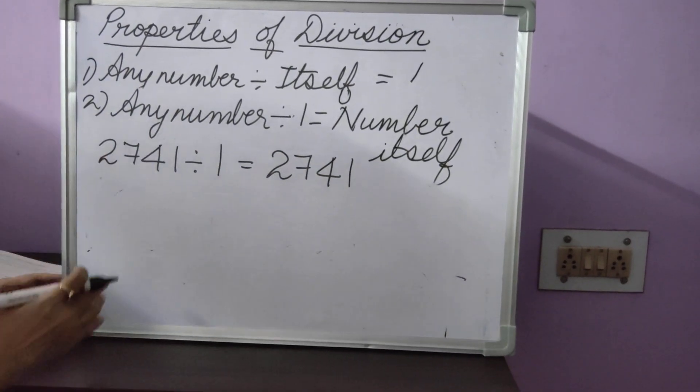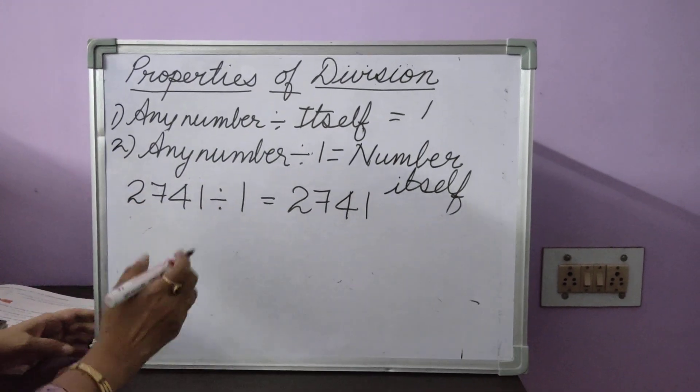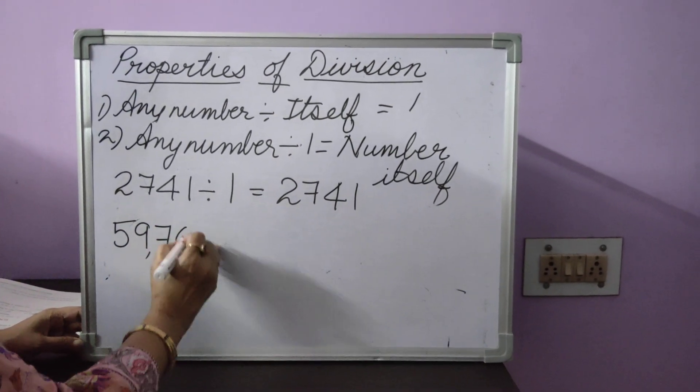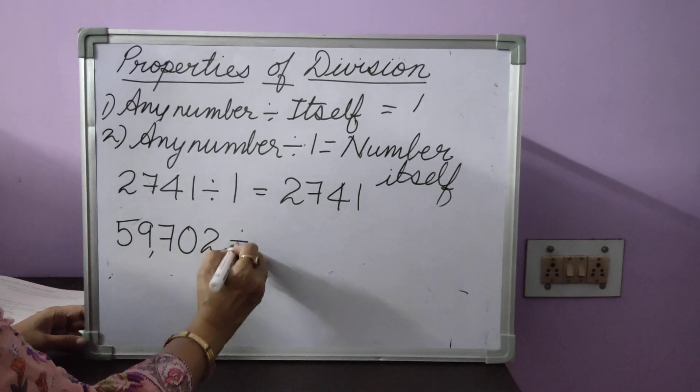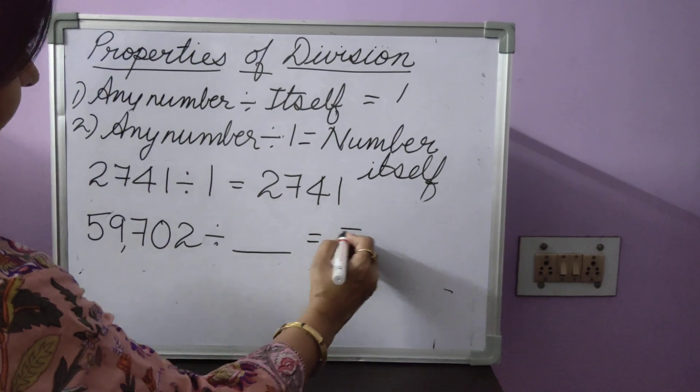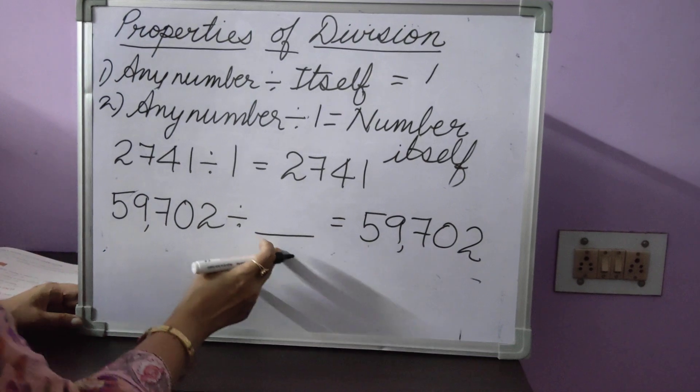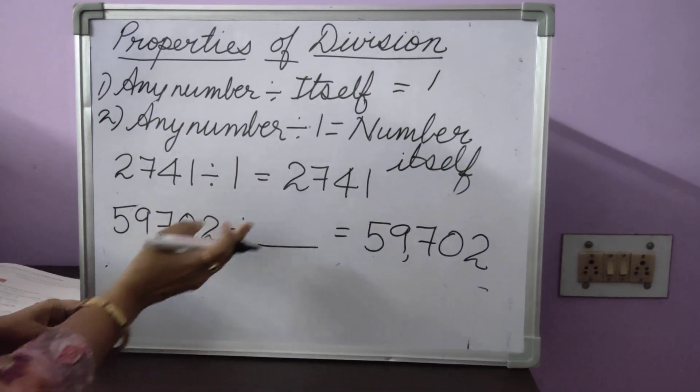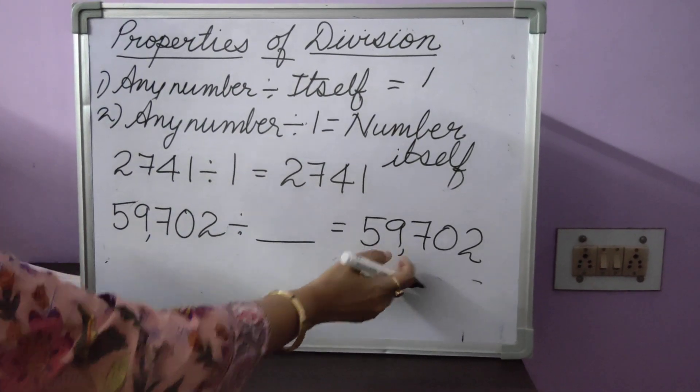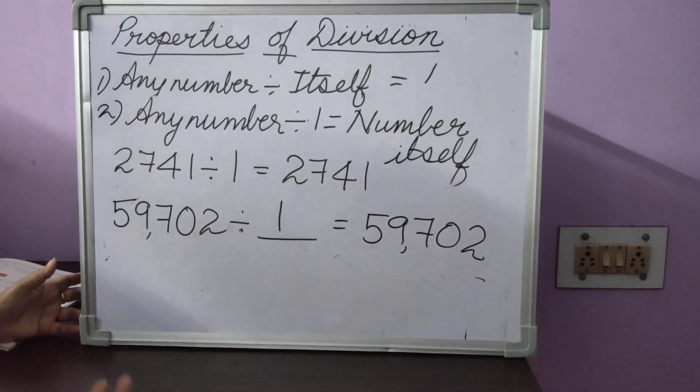And the same concept we are going to use to find out missing numbers, howsoever big the number is. Now, let's take 59,702 divided by some number to give you the answer 59,702. Now, you have a missing number over here. Now, what will be that number which if you divide 59,702 will give you the same answer? It will be 1.